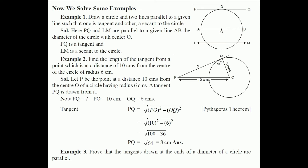AB is the diameter. PQ is parallel to AB, and LM is also parallel to AB. Therefore PQ and LM are parallel to each other. In this way we have drawn two lines parallel to a given line — one tangent and one secant.